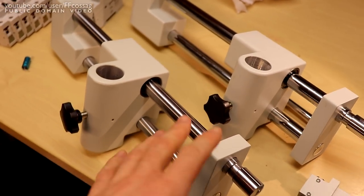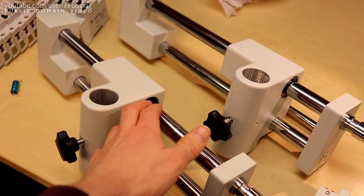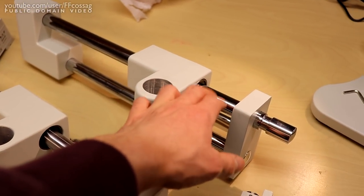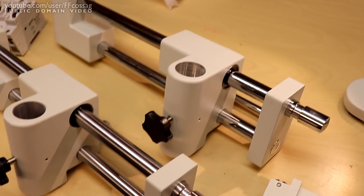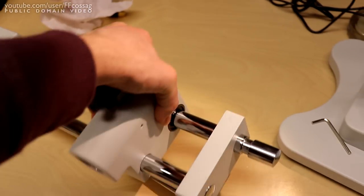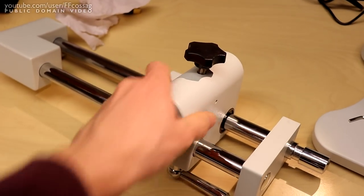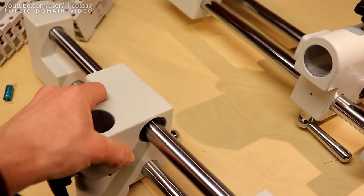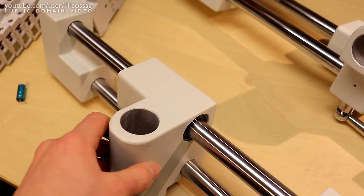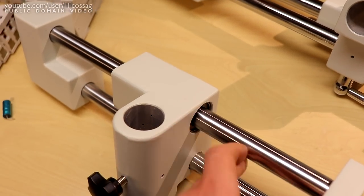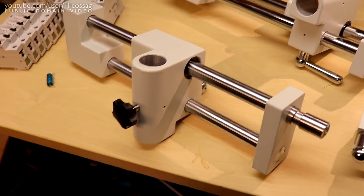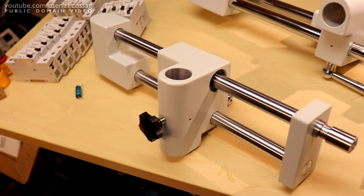The next question is, have they changed the dimension? Because another issue with these old boom arms is this rod was undersized, actually ever so slightly too small, so we get a lot of play in the bearings. I'm suspecting this one might still be undersized just looking at it, but they have changed the material and that is a big thumbs up.